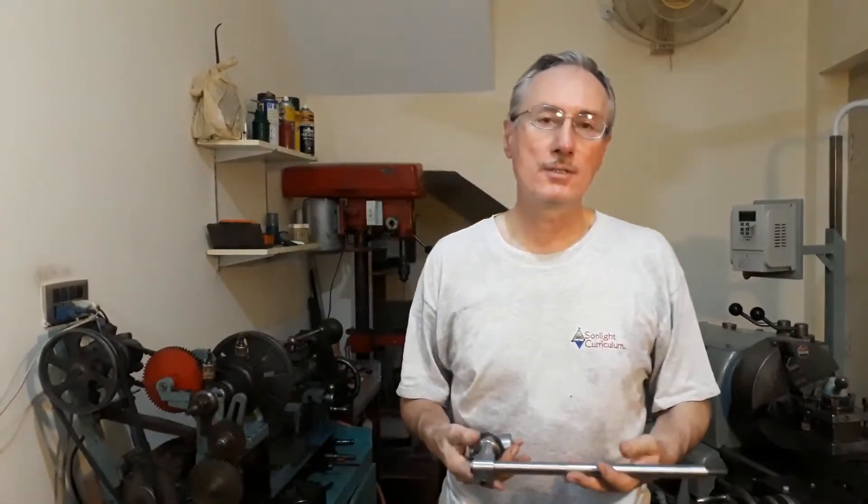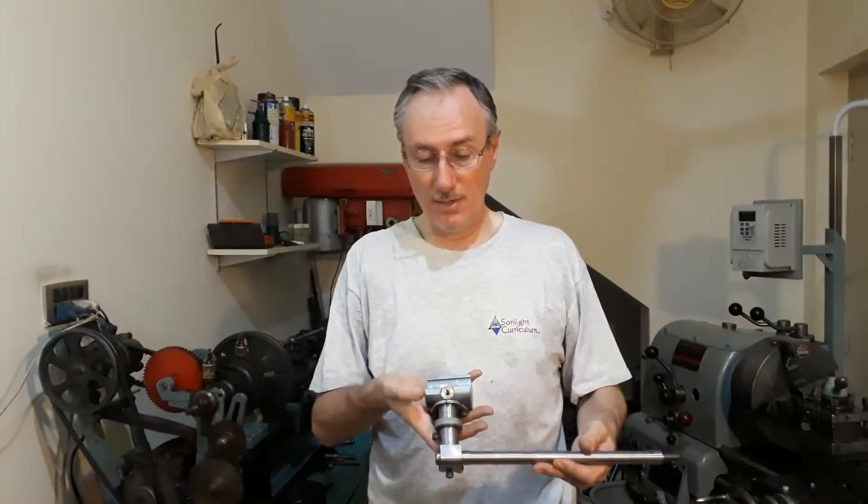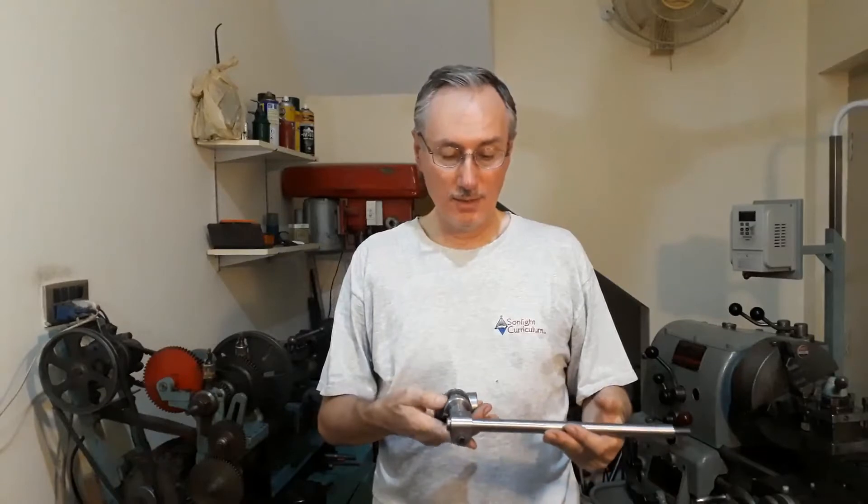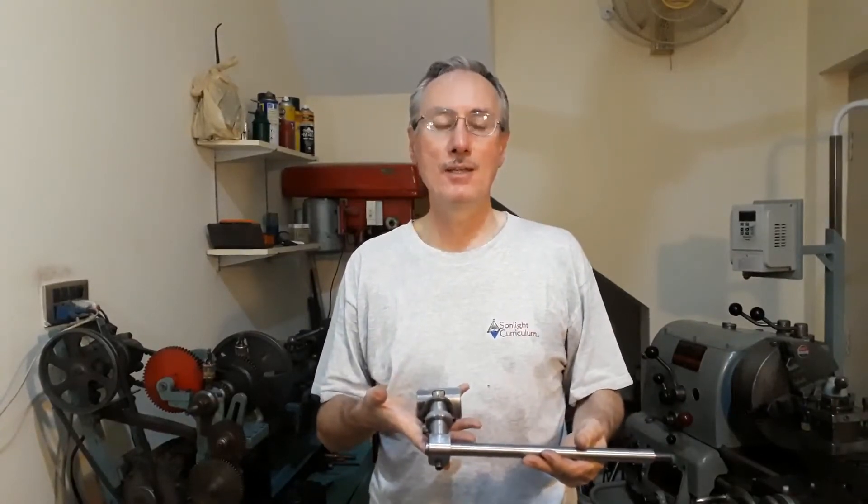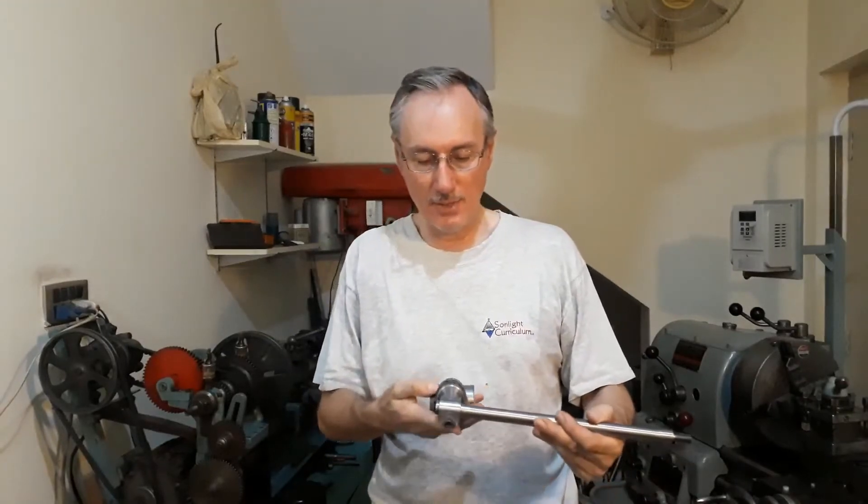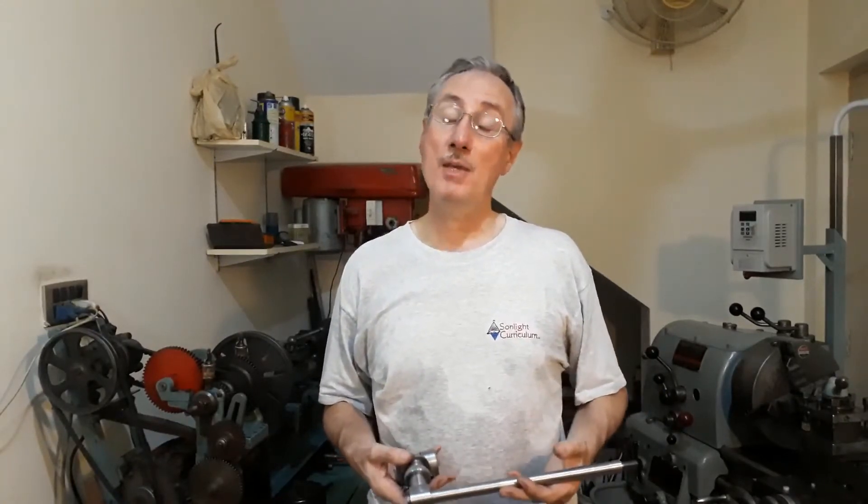I suspect that other people have acquired this lathe or maybe similar lathes and found that some of the parts of the taper turning attachment are missing. The reason I think that others might have encountered the same problem is that it would be very easy for these to be removed from the lathe, put away in a cupboard and when somebody shifts the lathe not realize that these are essential part of the machine. I have to admit they don't actually immediately lend themselves from their appearance to being part of the machine so maybe that's why mine was missing.